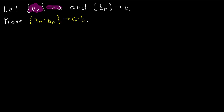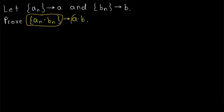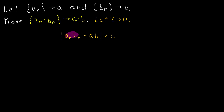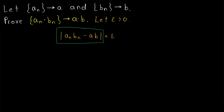We'll prove that if aₙ converges to a and bₙ converges to b, then the sequence whose nth term is aₙ times bₙ converges to a times b. So the product of convergent sequences converges to the product of the limits of those sequences. As usual, to prove this we begin by taking an arbitrary ε > 0. Then we want to show that the distance between terms of our sequence and the desired limit a·b is eventually less than ε, so we want to make |aₙbₙ - ab| arbitrarily small.